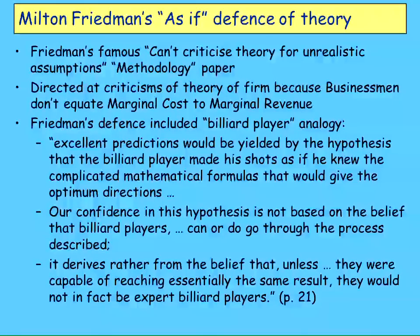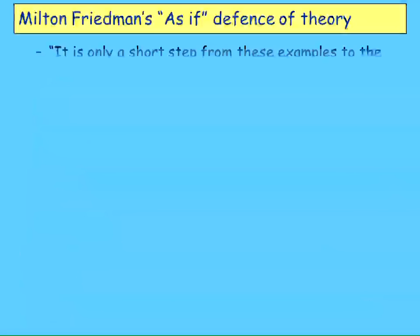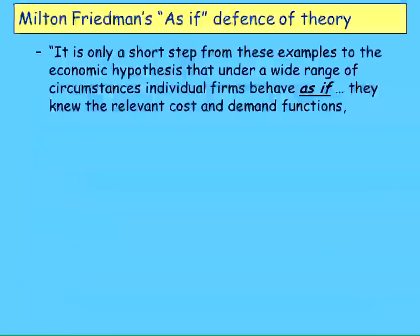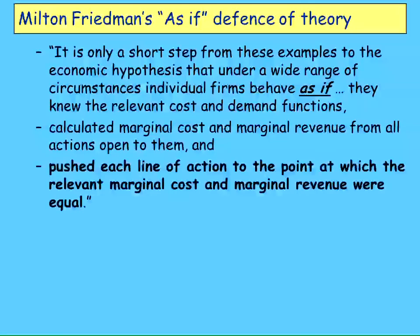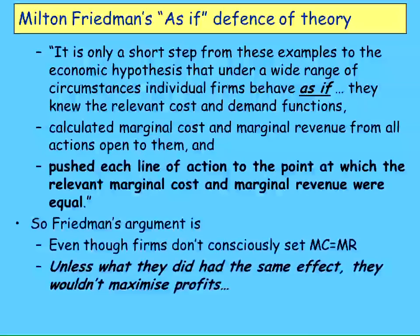They might not think they're doing it, but if that's not what they're actually doing, they won't sink the ball. Friedman said it's only a small step from that example to arguing that firms behave as if they knew the cost functions, calculated marginal cost and marginal revenue, and pushed output until the two are equal. So he's saying don't worry about those other academic papers — ignore them. Even though firms don't consciously set marginal cost equal to marginal revenue, unless they do that, they won't maximize profits. That was said in 1953.